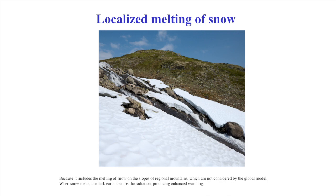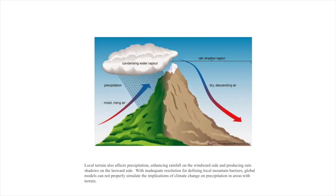When snow melts, the dark earth absorbs the radiation, producing enhanced warming. Local terrain also affects precipitation, enhancing rainfall on the windward side and producing rain shadows on the leeward side. With inadequate resolution for defining local mountain barriers, global models cannot properly simulate the implications of climate change on precipitation in areas of terrain.